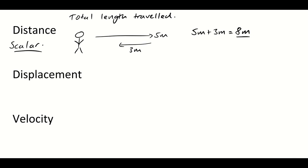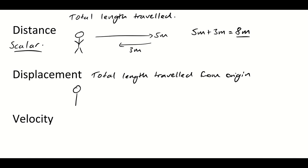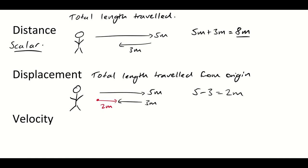Displacement is the total length travelled from the origin. Using the same example, our stickman goes 5 metres one way, then turns around and comes 3 metres back the other way. The total distance he's travelled from the origin is only 2 metres — it's 5 minus 3, which equals 2 metres.